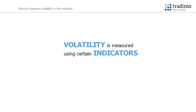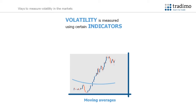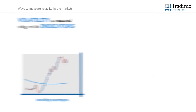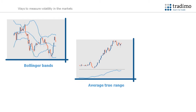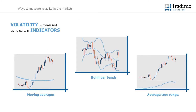In trading, volatility is measured using certain indicators. Moving averages, Bollinger Bands, and Average True Range are the most common indicators to use. Each of these indicators can be used slightly differently to measure the volatility of an asset, and, more importantly, interpret this data in a different format.